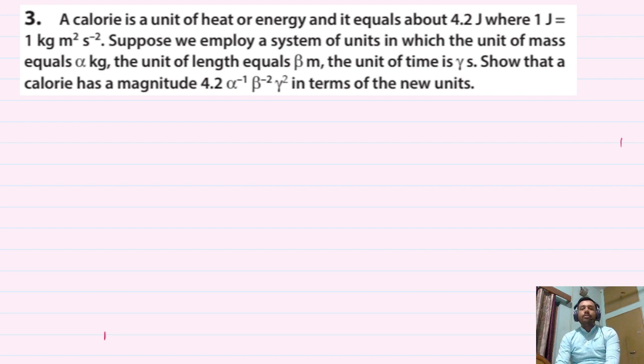A calorie is a unit of heat or energy and it equals 4.2 joule, where 1 joule is 1 kg m² s⁻². Suppose we employ a system of units in which the unit of mass equals α kg, the unit of length equals β m, and the unit of time is γ s. Show that a calorie has a magnitude of 4.2 α⁻¹ β⁻² γ² in terms of the new units. It is a very easy question.